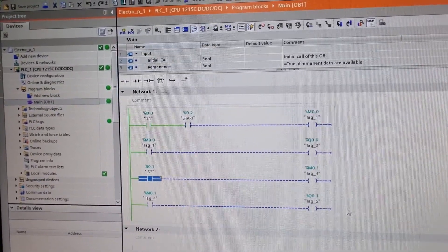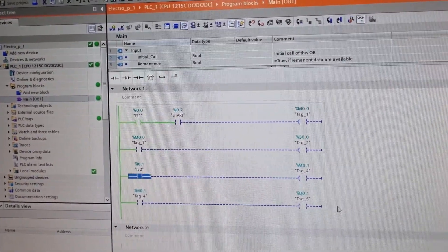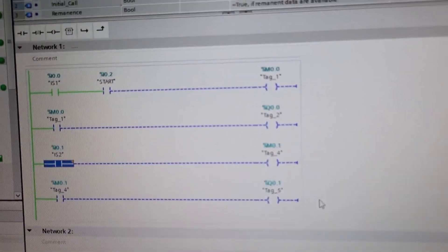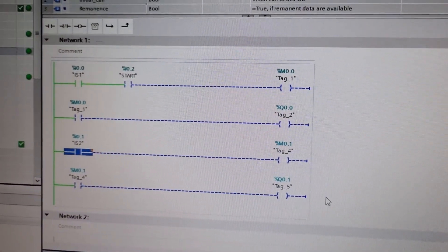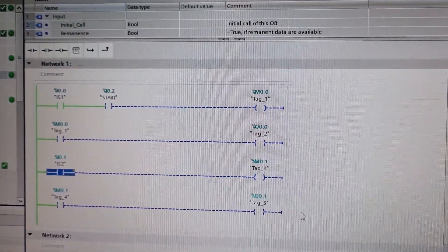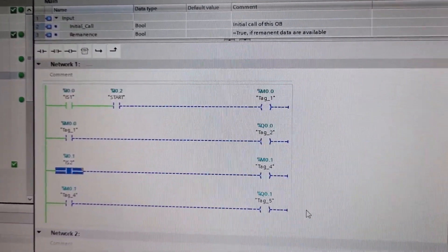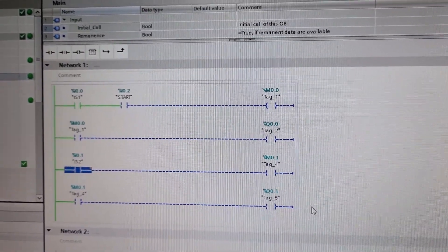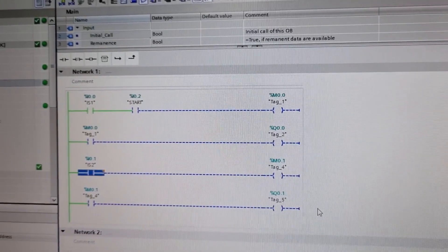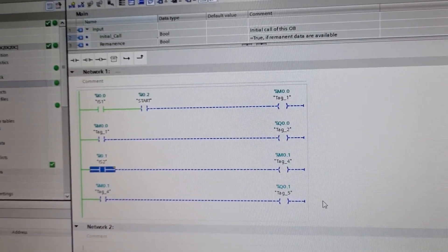Then we have I0.2, which is an on-off switch to start this operation. The two solenoid inputs are given from Q0.0. Q0.0 is connected to one end of the 5/2 solenoid valve. Once it is energized, it will start the extension of the cylinder. Q0.1 is connected to the other end of the solenoid valve. When it is energized, it will start the retraction process.